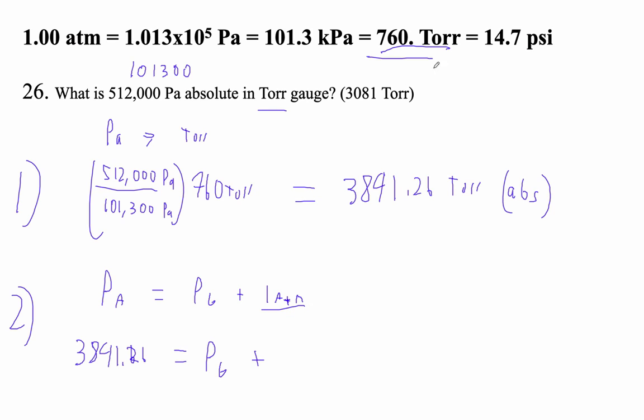So I just subtract 760. Minus 760 is 3081, so our gauge pressure is 3081.26 Torr.